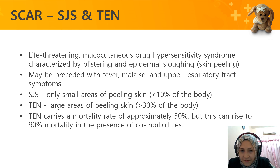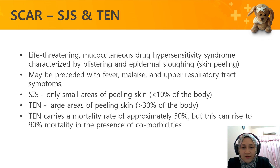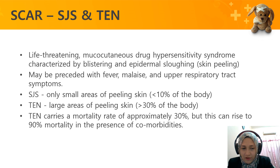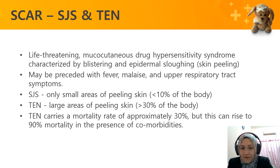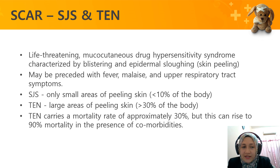The patient may first present with fever, malaise, and upper respiratory tract symptoms. The difference between Stevens-Johnson Syndrome and Toxic Epidermal Necrolysis is the body surface area affected: SJS involves less than 10% skin peeling, TEN involves more than 30%, and overlap SJS/TEN covers 10 to 30%. TEN carries a mortality rate of approximately 30%.